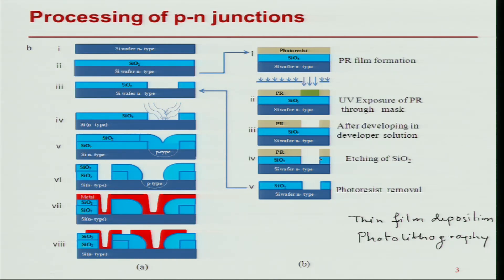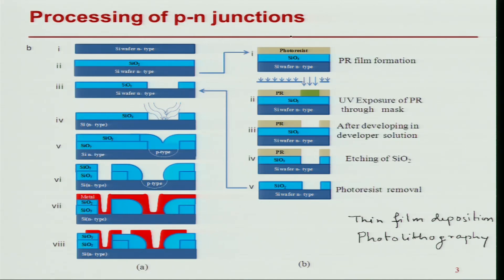But what I wanted to do was create a pattern in the silicon oxide. So I need to follow it up with an etching process. After opening the window in the photoresist, I will use an etchant for silicon oxide. By that process, I etch a window in the silicon oxide and then remove the photoresist. What I have done is taken the initial blanket silicon oxide film and created an opening in a particular area. This whole sub-process is called photolithography. We can generate any type of pattern by designing a particular mask using this process.